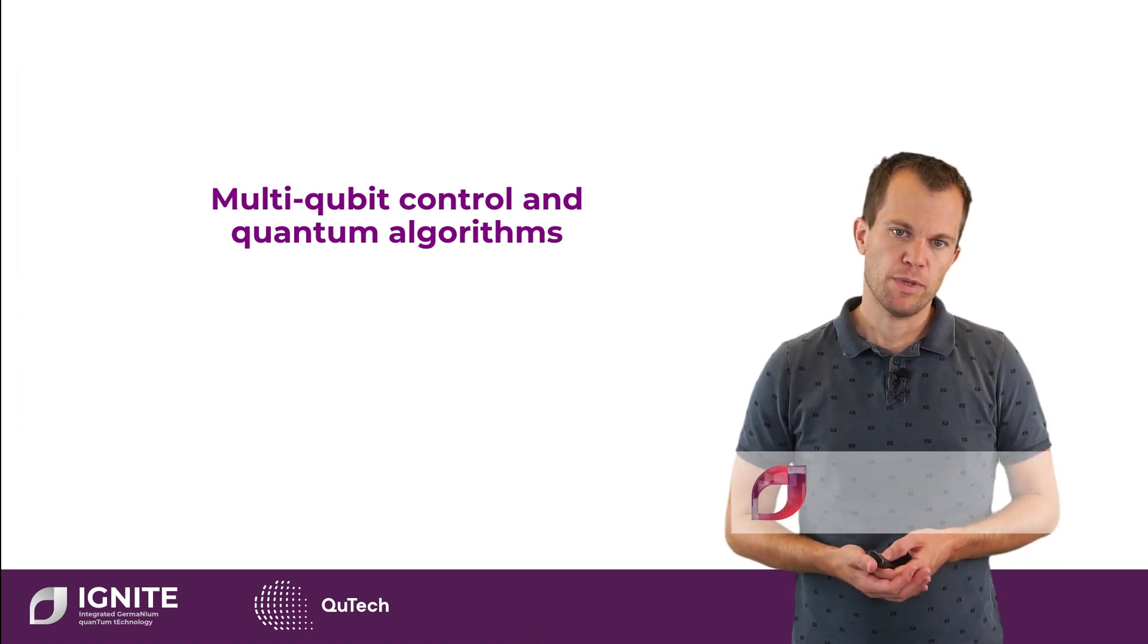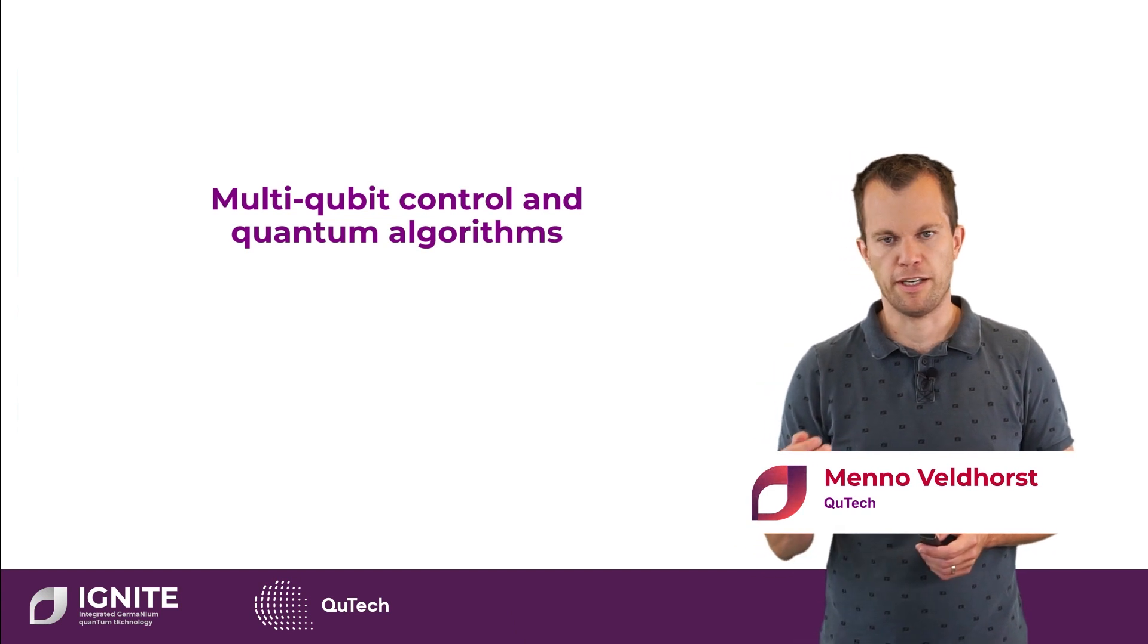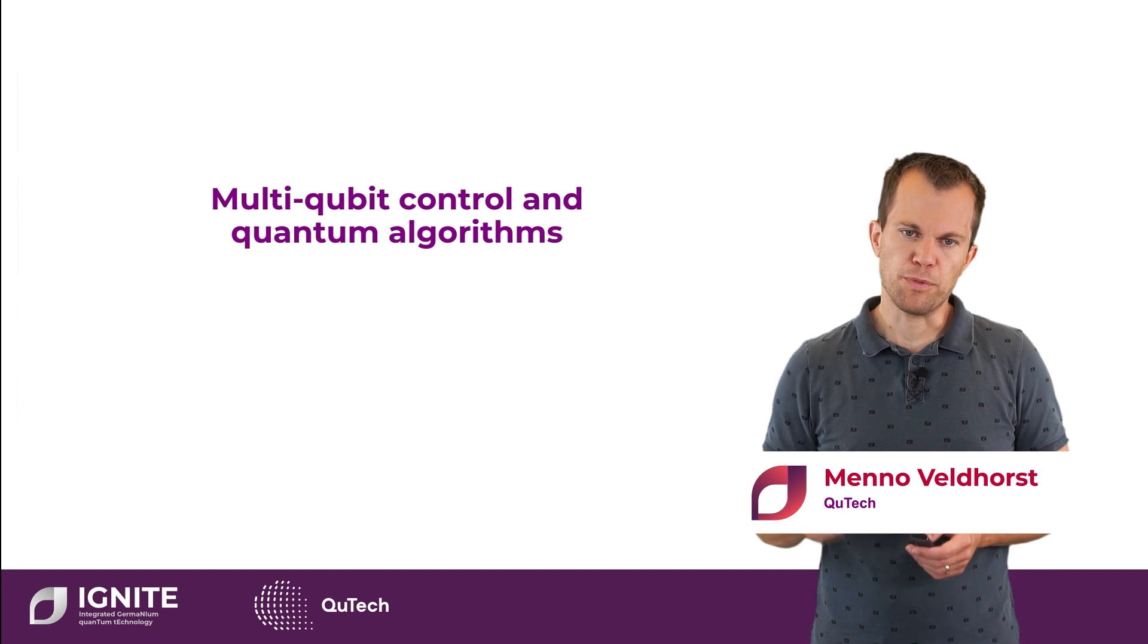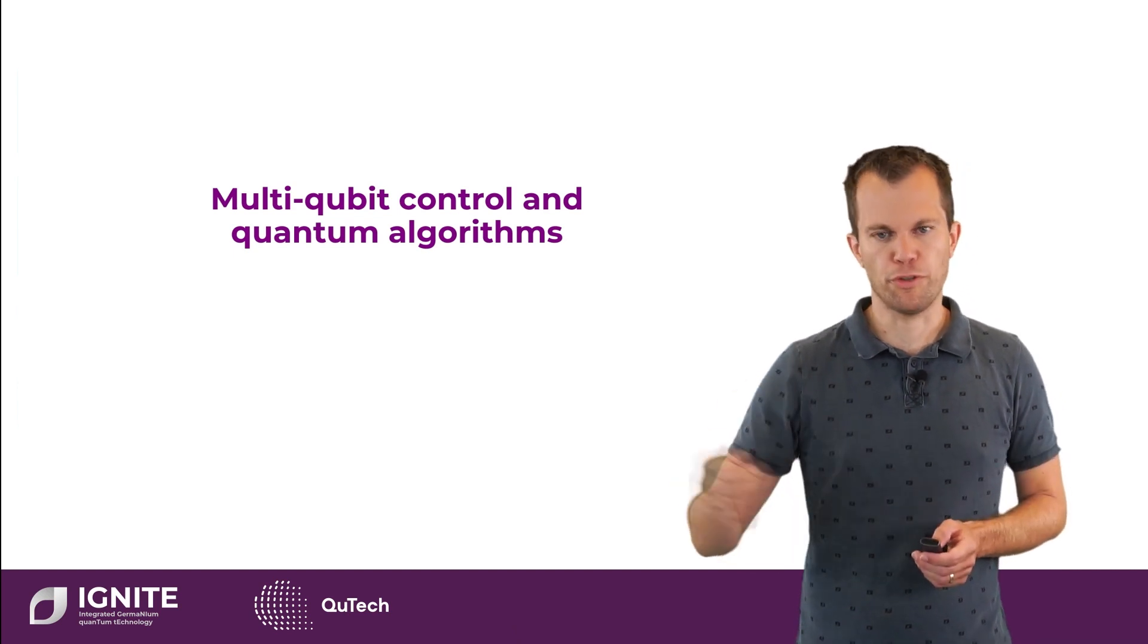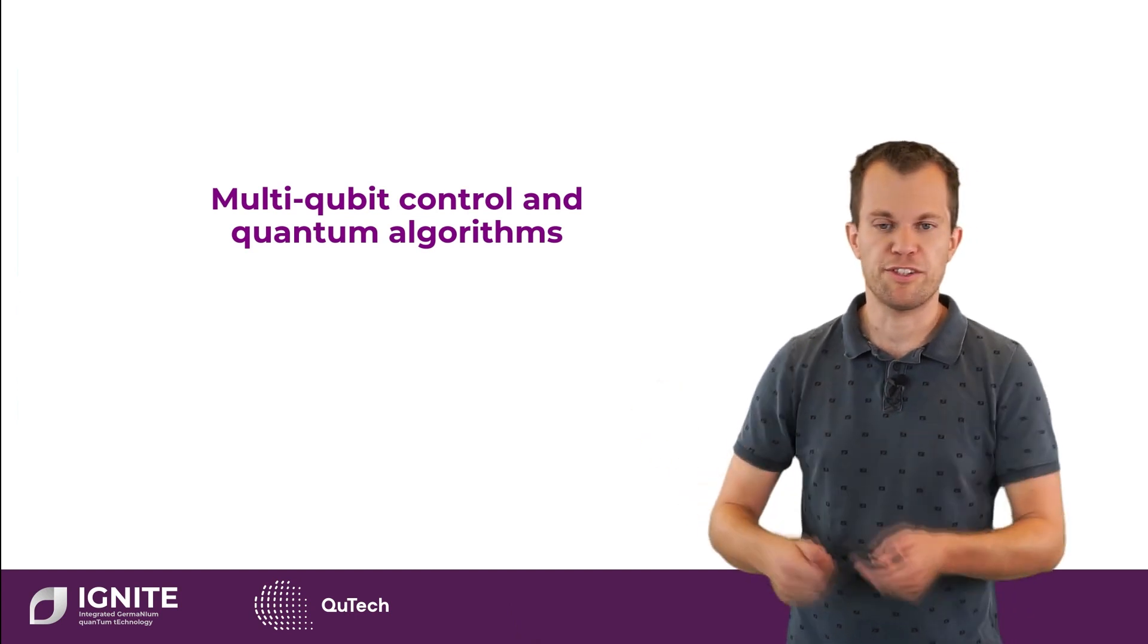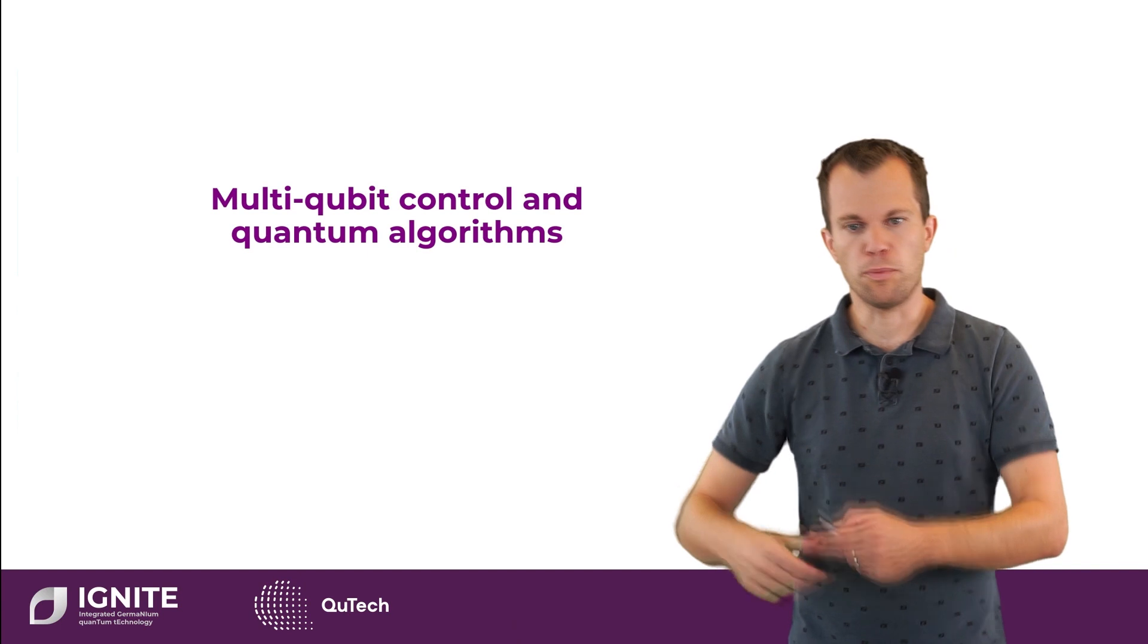In Germanium, we can do single qubit gates on single spins by EDSR, but we also want to do multi-qubit gates. For example, we may want to do two qubit gates between two qubits. We may also want to couple more qubits.